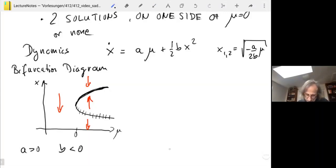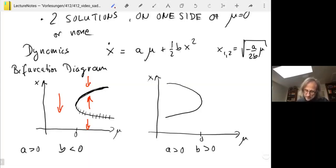So that's one bifurcation diagram we get for a greater than zero and b smaller than zero. Let's also look at the case a is greater than zero, but b also positive. Then the solution only exists if mu is negative, and so the parabola is like this. In terms of stability, the same procedure. If mu is positive, then the first term is positive. The second term is positive. So we have a flow like this. In terms of stability, we have this branch being stable and this branch being unstable.